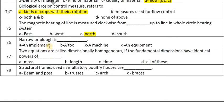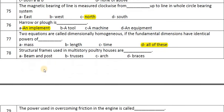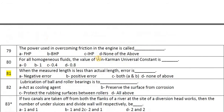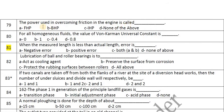The magnetic bearing of a line is measured clockwise from north. A harrow or plow is an implement. Two equations are called dimensionally homogeneous if the fundamental dimensions have identical powers of mass, length, and time. Structural frames used in multi-story poultry houses are beam and post.